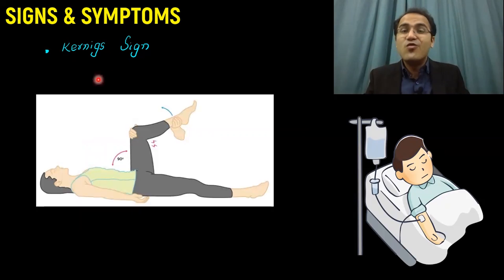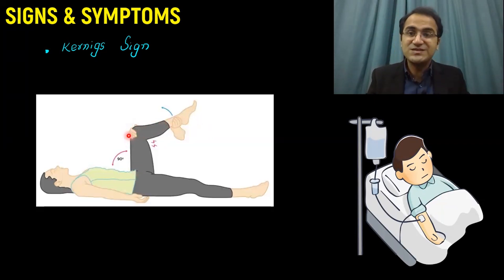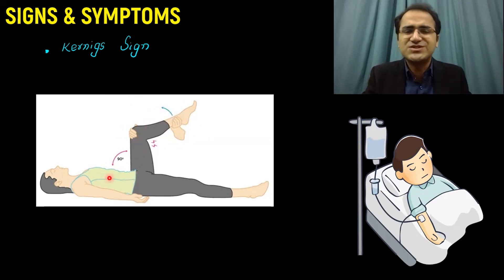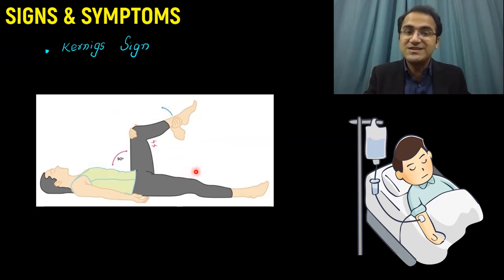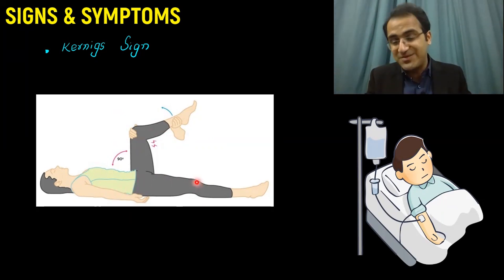For Kernig's sign, you flex the patient's hip joint at 90 degrees and flex the leg at 90 degrees. Then you slowly and gradually try to straighten the leg. The sign is positive if the patient experiences severe pain in the spine when you try to straighten the leg, or if they flex their other knee joint. These are the two findings that show a positive Kernig's sign.